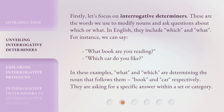Firstly, let's focus on interrogative determiners. These are the words we use to modify nouns and ask questions about which or what. In English, they include 'which' and 'what'. For instance, we can say, 'What book are you reading?' or 'Which car do you like?' In these examples, 'what' and 'which' are determining the noun that follows them — book and car, respectively. They are asking for a specific answer within a set or category.